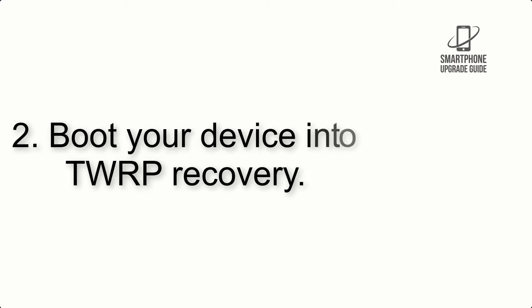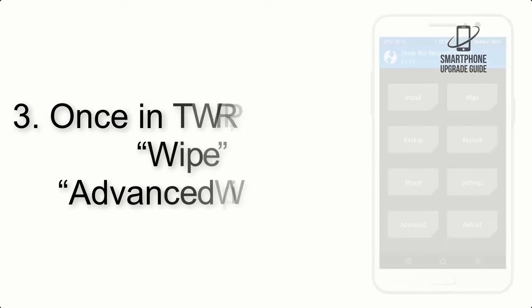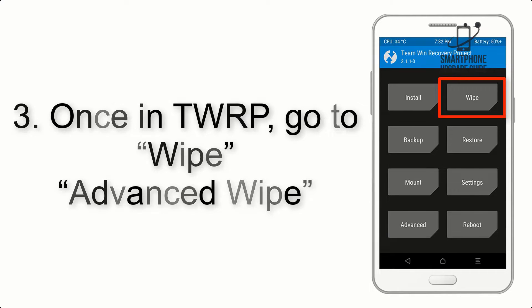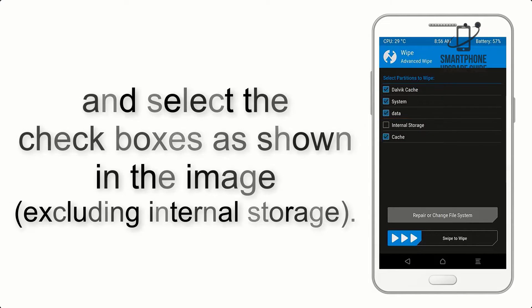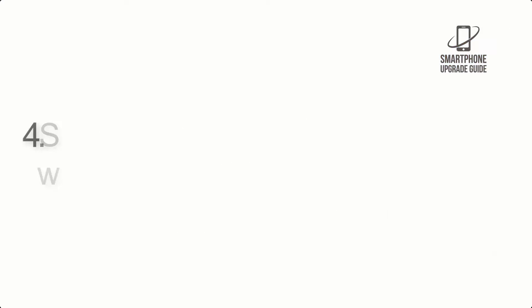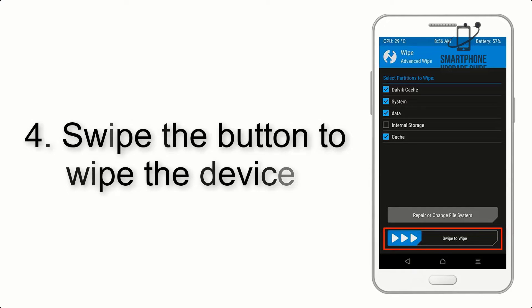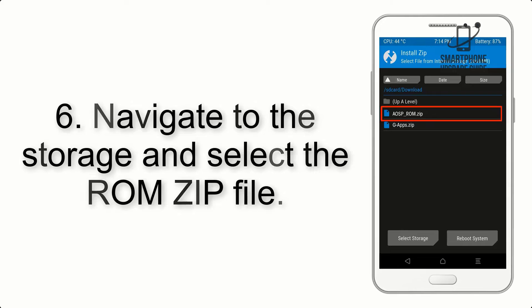Step 2: Boot your device into TWRP recovery. Once in TWRP, click on Wipe, then Advanced Wipe, and select the checkboxes as shown in the image, excluding internal storage. Step 4: Swipe the button to wipe the device. Step 5: Go back to the recovery main screen and tap on the Install button.